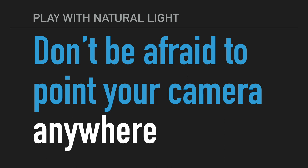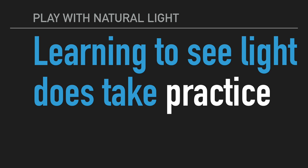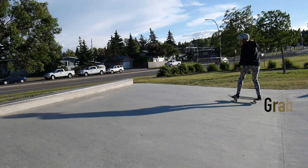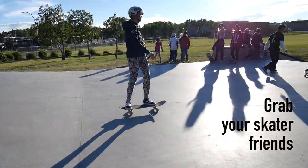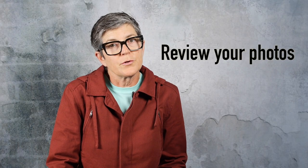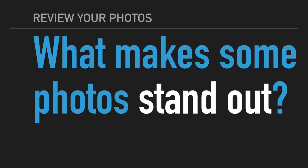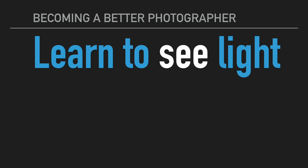It's really fun to just play with natural light — don't be afraid to point your camera anywhere. Learning to see light does take some practice, so take lots of pictures. Grab some skater friends and practice working with light and shadow. Review your photos: what properties of light make certain photos stand out over others? You will eventually learn to see light even before you take any photos, and this is part of becoming a better photographer.